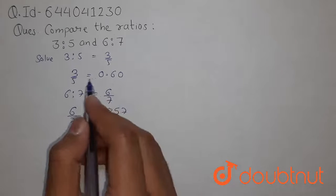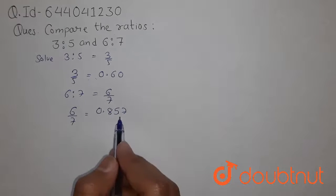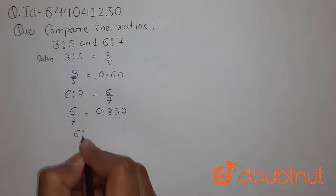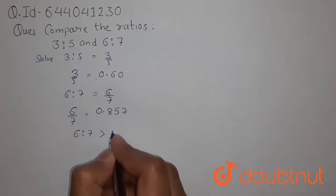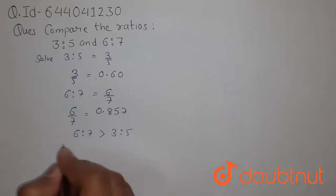Now, seeing that we know that this value is greater from this. So, 6 ratio 7 is greater than 3 ratio 5. This is our answer.